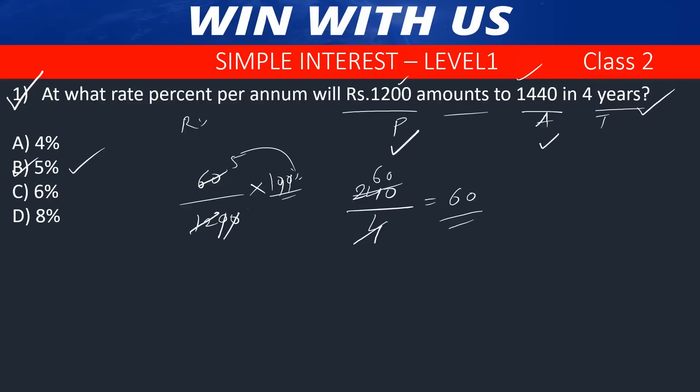Let us know how much the interest is. The interest formula: I = P × T × R / 100, or Amount = P × (1 + RT/100). The interest calculation is straightforward using these formulas.